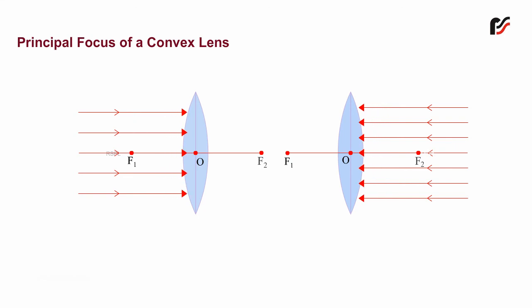a convex lens, the rays after refraction through it meet at a fixed point on the principal axis. This point is called the principal focus of the convex lens.